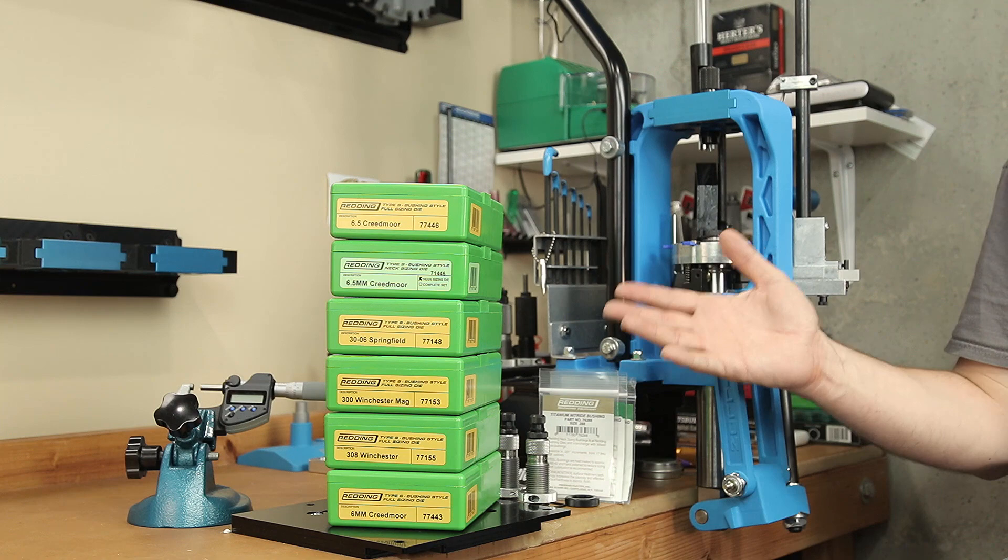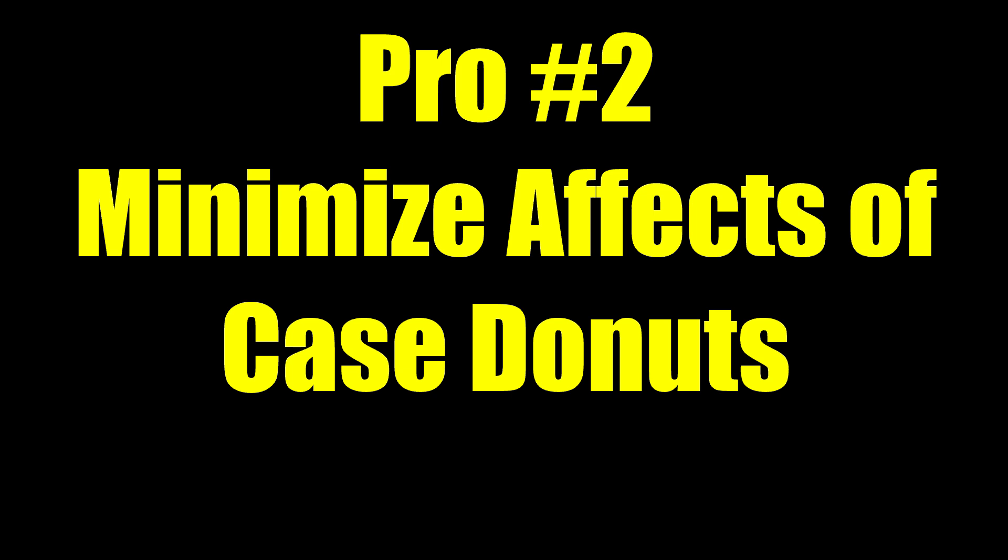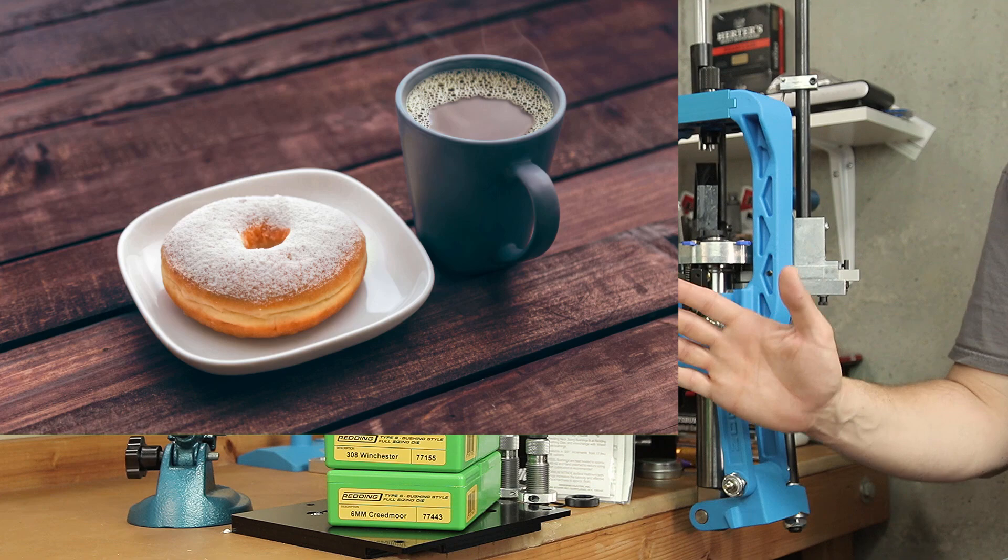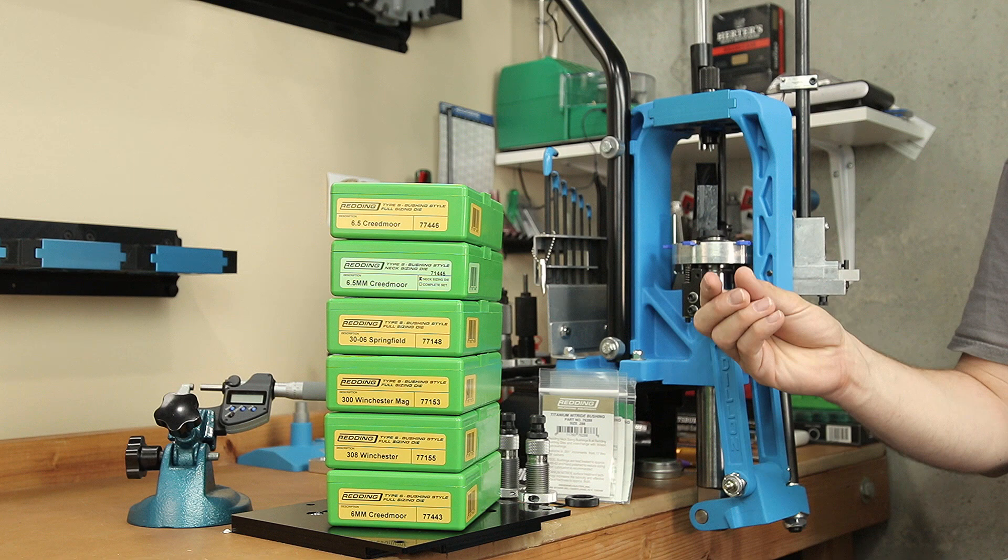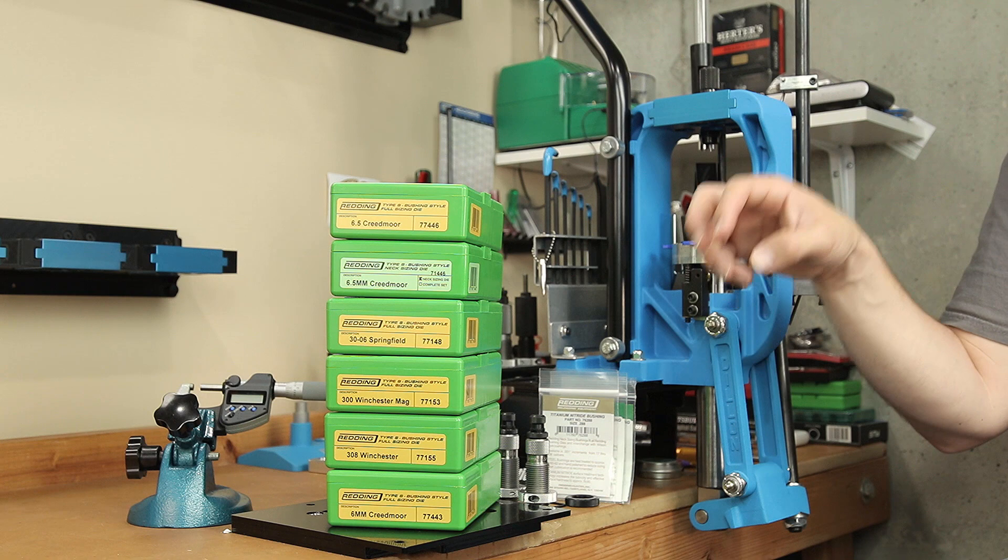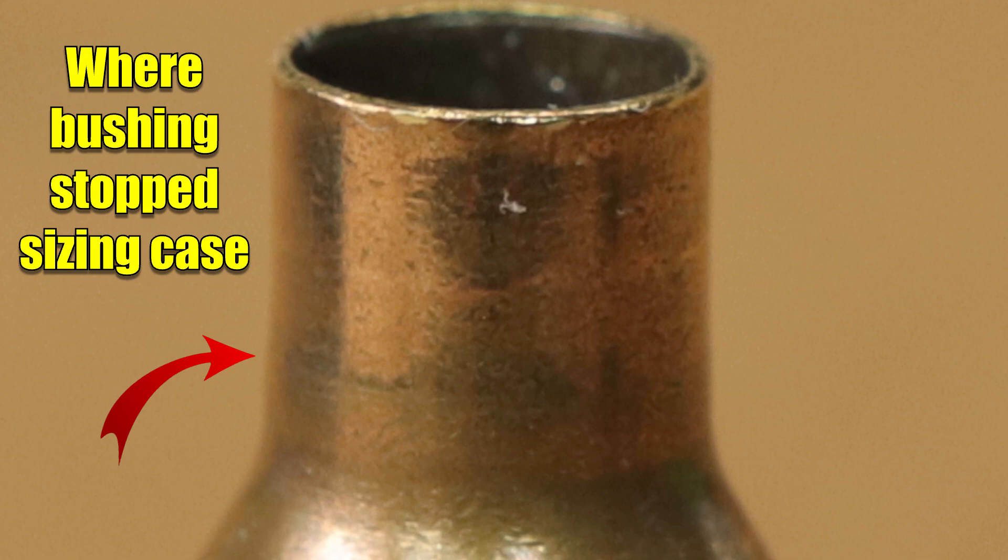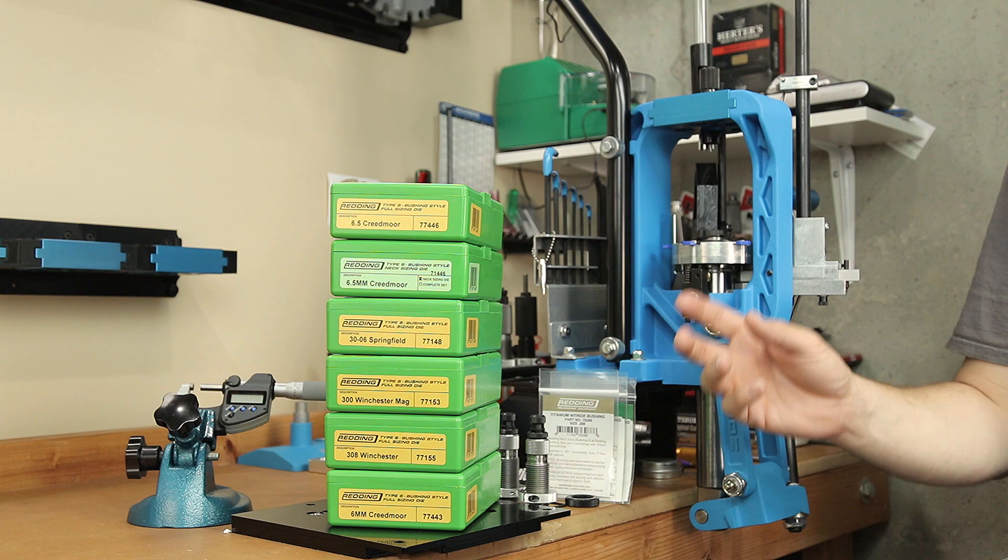The second reason you might want to look at these bushing dies is case donuts. Now it seems like they would have come up with a better name for these because donuts are just sweet and delicious, right? And case donuts I have no interest in. Case donuts form at the neck shoulder junction inside of your brass, so you may not see them on the outside. However, they can provide inconsistent neck tension on your projectile and cause you issues downrange. How do these help? Well, that bushing you can set so it doesn't actually resize the entire neck of the case. Where it might not completely eliminate where the case donut is, it can certainly reduce the sizing in that area and not be quite as prone to giving you variations in neck tension using bushing dies.